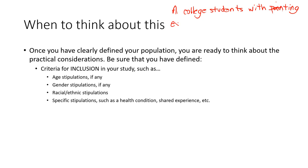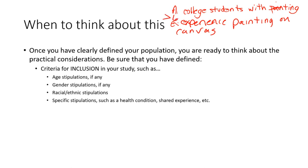So with more than six months' experience painting on canvas — that's her inclusion criteria. She might think of one more. Those are her inclusion criteria, and she might still think of others.